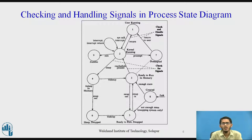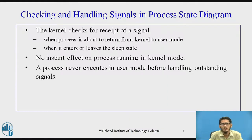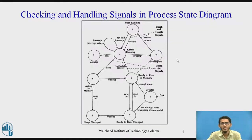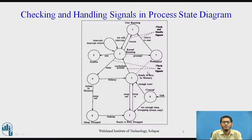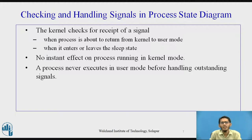This is the process state diagram showing how signals are checked and handled. The kernel checks for the receipt of a signal only when a process is about to return from kernel to user mode, or when it enters or leaves the sleep state. There is no instant effect on a process running in kernel mode, and a process never executes in user mode before handling outstanding signals.